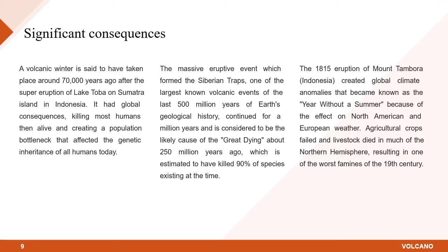The massive eruptive event which formed the Siberian Traps, one of the largest known volcanic events of the last 500 million years of Earth's geological history, continued for a million years and is considered to be the likely cause of the Great Dying about 250 million years ago, which is estimated to have killed 90% of species existing at the time. The 1815 eruption of Mount Tambora, Indonesia created global climate anomalies that became known as the year without a summer because of the effect on North American and European weather. Hungry cultural crops fell and livestock died in much of the northern hemisphere, resulting in one of the worst famines of the 19th century.